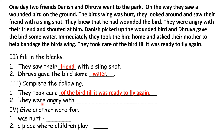They were angry with — and then there is a dash. Find the words and continue the sentence till the first full stop. The full stop ends here, so you write only till there: they were angry with their friend and shouted at him. That is your answer.